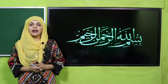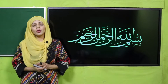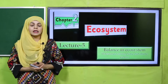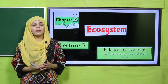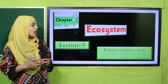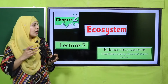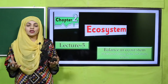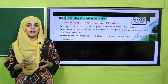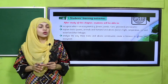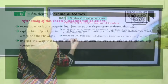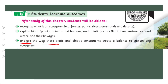Bismillahirrahmanirrahim, assalamualaikum. I hope you all are fine, staying safe and happy. I am your science teacher, Miss Farheen, and I welcome you all to your science class. As you know, we have started chapter number two, Ecosystem, and today I will deliver its fifth lecture. We will discuss how to create balance in an ecosystem. By the end of today's lecture, all students will be able to analyze the way biotic and abiotic constituents create a balance to sustain any ecosystem.